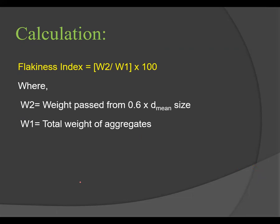The formula to calculate the Flakiness Index is: Flakiness Index = (W2 / W1) × 100. Here, W2 is the weight of aggregate passing through the 0.6 × D-mean size slot (i.e., the thickness below mean dimension), and W1 is the total weight of the aggregate sample. This test is applicable only for aggregate sizes larger than 6.3 mm.